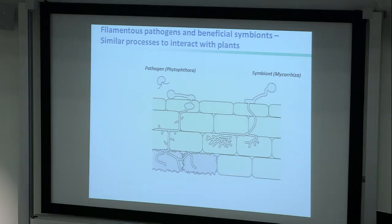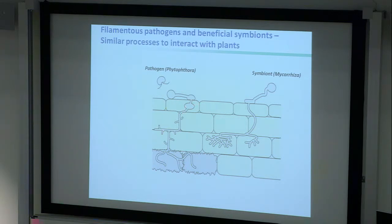Looking at how filamentous pathogens and beneficial symbionts colonize plant tissue, there are many commonalities. On the surface, both start as a spore, germinate, and then form adhesive structures to penetrate the surface — either through a cell or through stomates. Most of the hyphal network extends between cells, but these organisms also stick little fingers or full branches into cells. We call these structures the interfaces, or symbiotic interfaces.